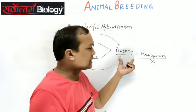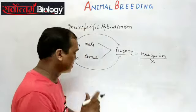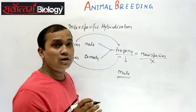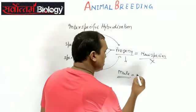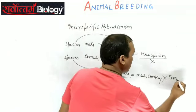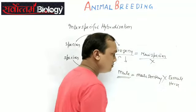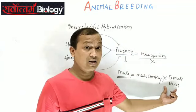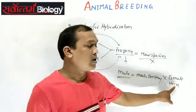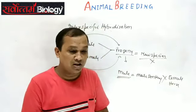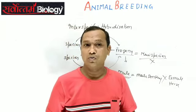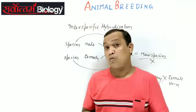An example of interspecific hybridization: a male donkey and a female horse are crossed. The progeny is called a mule. This is a classic example of interspecific hybridization.